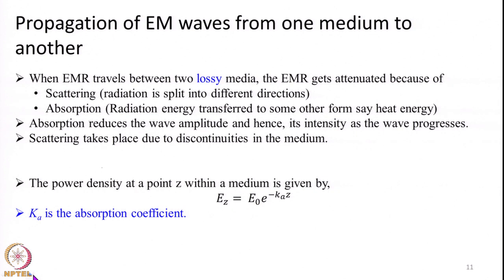When discussing reflection and refraction we assumed the mediums were non-lossy. However, most mediums that EMR passes through on the earth's surface are actually lossy — meaning when some units of energy enter a medium and emerge after passing through, the energy is reduced by a certain factor. The atmosphere and earth surface features are almost all lossy mediums; when EMR interacts with them, some part of the EMR will be lost. This energy is lost primarily due to two processes: scattering and absorption.